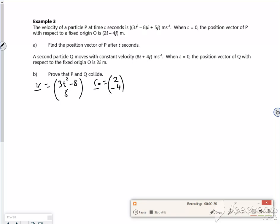Find the position vector after t seconds. Right then, okay. So r is the integral of v dt. So integrating 3t squared minus 8 and 5 dt.